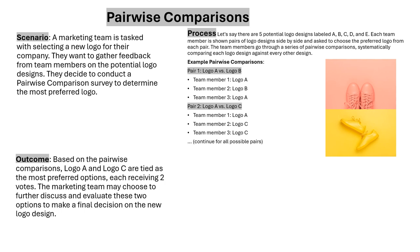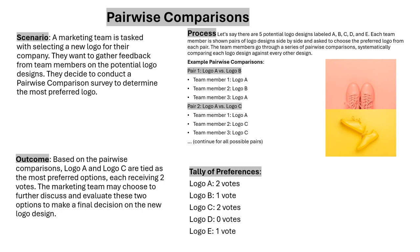Team members go through a series of pairwise comparisons, systematically comparing each logo design against every other design. For example, pair one is logo A versus logo B, and pair two is logo A versus logo C. This continues for all possible pairs. Once completed, the results show: logo A received 2 votes, logo B received 1, logo C received 2, logo D received 0, and logo E received 1. Logo A and logo C are tied as the most preferred options. The marketing team then further evaluates these two options to make the final decision on the new logo design.